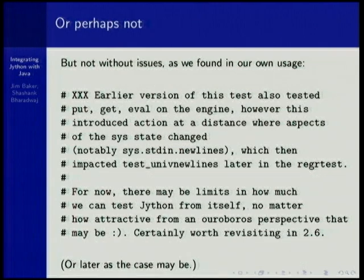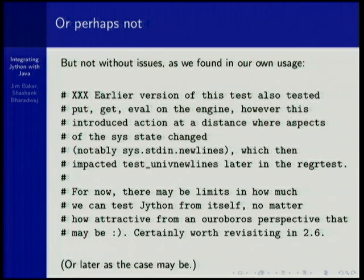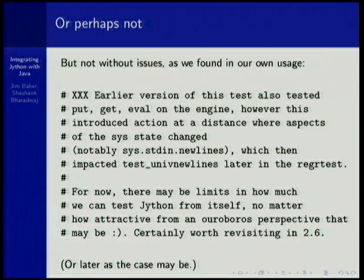It's all good, but not without issues as we found in our usage. An earlier version of this test also tested additional things, but unfortunately it introduced an action at a distance where aspects of the system state changed, which then impacted other tests. For now, there may be limits in how much we can test Jython from itself, no matter how attractive. From an Ouroboros perspective — the snake swallowing its tail — it's certainly worth revisiting in Jython 2.6. Clearly someone did not update that since then.